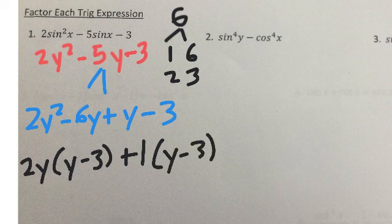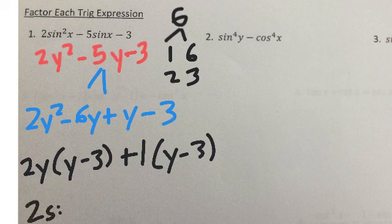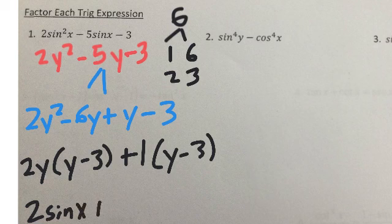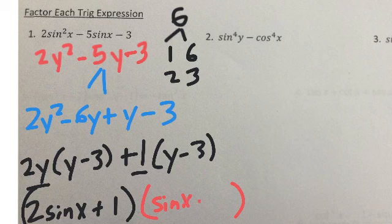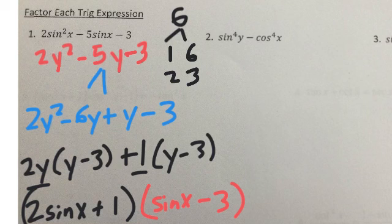And so remember, my y was just sine of theta or sine of x. So this is 2 times sine of x plus 1. That's what was in front of the parentheses. And then what's inside the parentheses is sine of x minus 3. So we just treat that big trig function just like it was a variable.